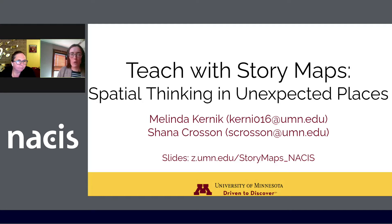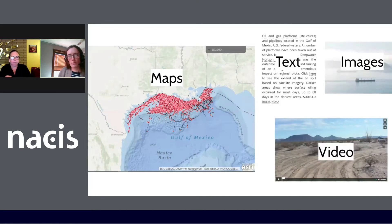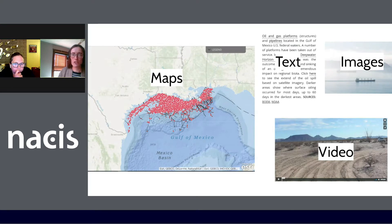Storymaps offer a way to integrate interactive digital maps with text, images, and other media to make compelling arguments. They are a low-barrier, low-anxiety way to get people started mapping and presenting visual explanations. With increasing awareness of available tools, we have seen rising interest from instructors in using storymaps as assignments.